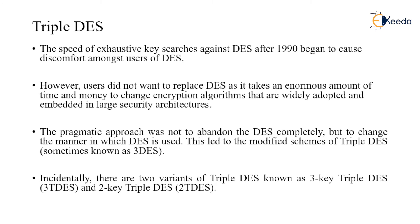The speed of exhaustive key search against DES after 1990 began to cause discomfort amongst users. In 1997 it was discovered that DES can be cracked. However, users did not want to replace DES as it takes enormous time and money to change encryption algorithms widely embedded in large security architectures. The pragmatic approach was not to abandon DES completely but to change the manner in which it is used.